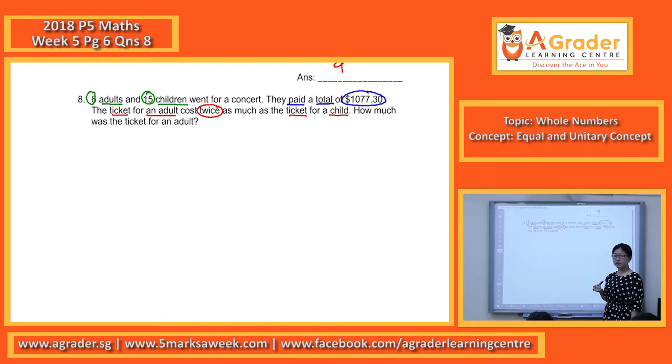In terms of this twice, in other words, for the adult ticket, it will cost 2U. For the child ticket, it will cost 1U.